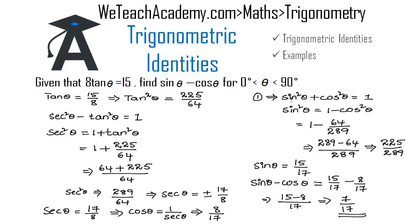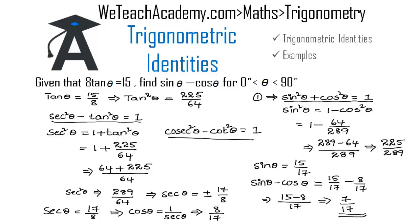Make a note of the identities: sine square theta plus cos square theta equals 1, secant square theta minus tan square theta equals 1, and cosecant square theta minus cot square theta equals 1. All these identities are also called Pythagorean identities. This was the basic introduction on how to solve examples using these identities. Hope you understood the concept. Do like and subscribe to vteachacademy.com. Thanks for watching. Have a nice day.